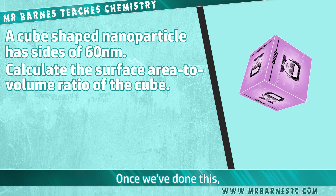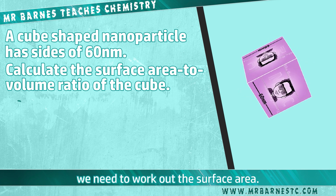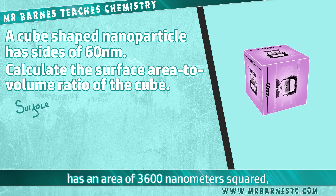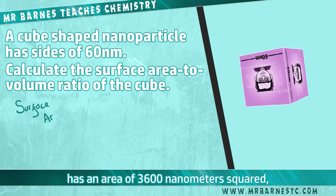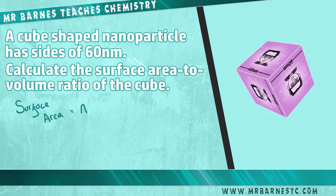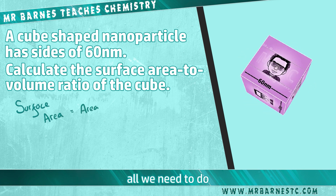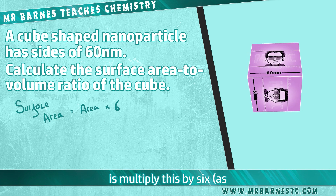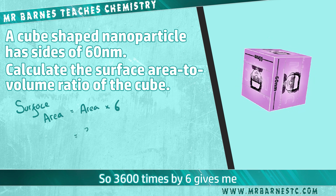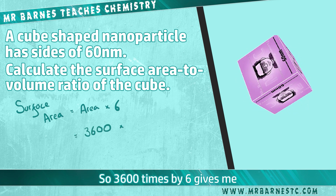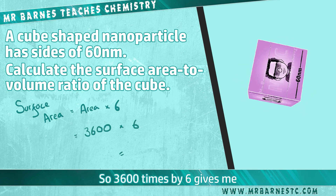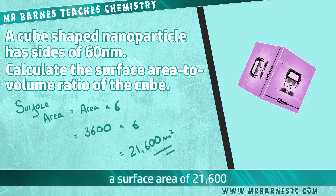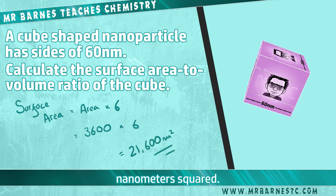Once we've done this we need to work out the surface area. If one side of the cube has an area of 3600 nanometres squared, all we need to do is multiply this by 6, as a cube has 6 sides. So 3600 times 6 gives a surface area of 21,600 nanometres squared.